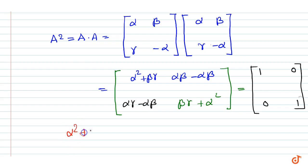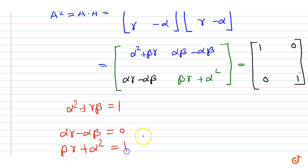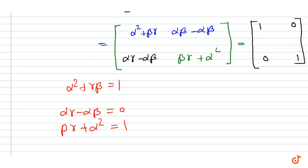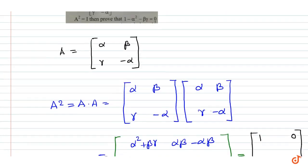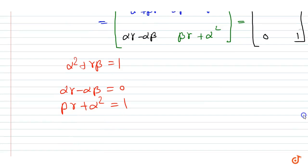This gives α² + γβ is equal to 1, αγ minus αβ is equal to 0, and βγ plus α² is equal to 1. From αβ equal to αγ, this gives β is equal to γ.